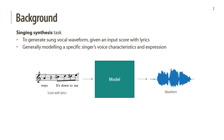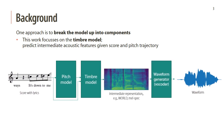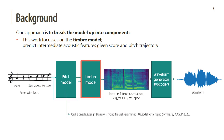To start with some background, the singing synthesis task can be defined as generating a sung vocal waveform given an input score with lyrics, generally modeling a specific singer's voice characteristics and expression. One approach is to break up the model into different components: a pitch model which predicts F0 given the input score, a timbre model which takes the predicted F0 curve and the input score and predicts an intermediate acoustic representation such as WORLD features or mel-spec features, and finally a waveform generator, which is typically either a heuristic vocoder or a neural vocoder. In this work, we will focus on the timbre model, and we have a different paper in the same conference that focuses on the pitch model.